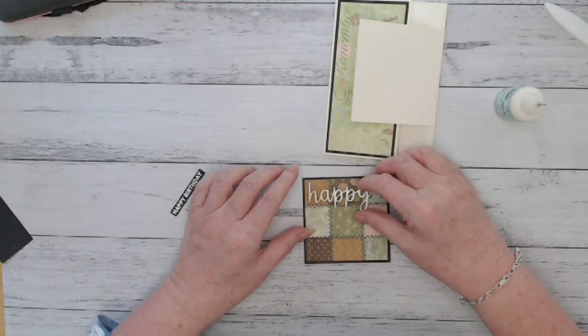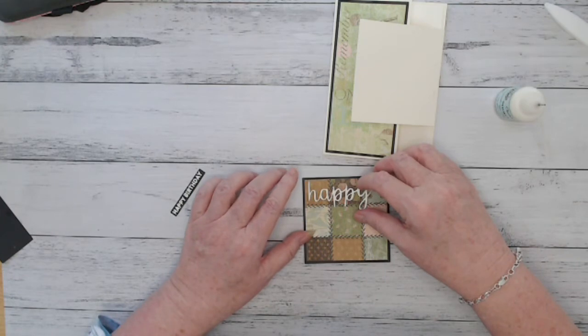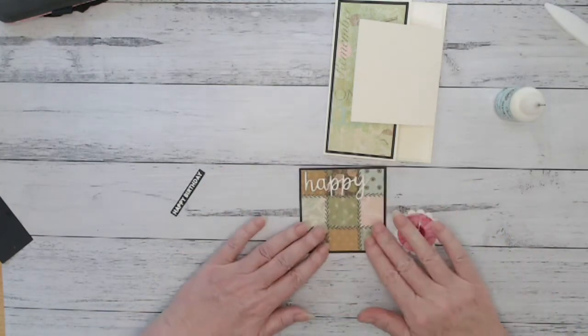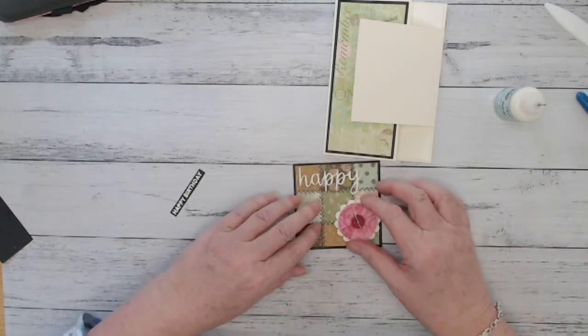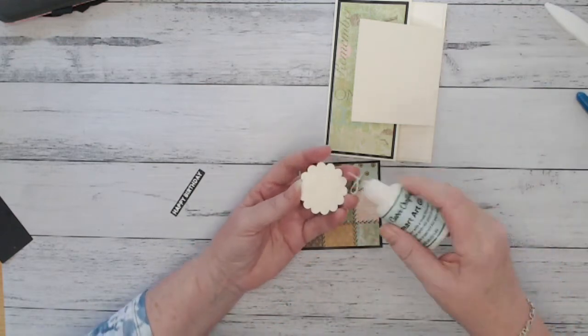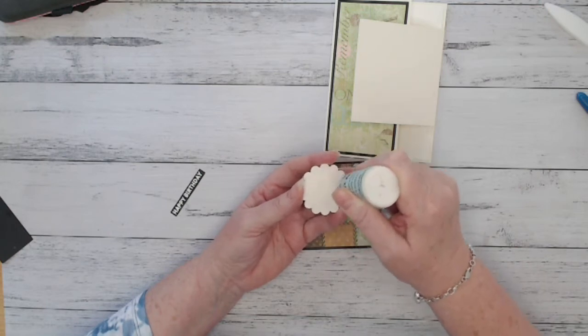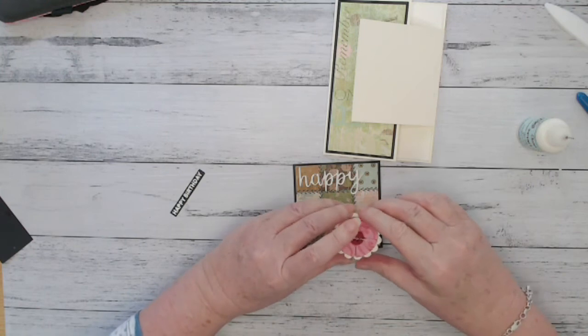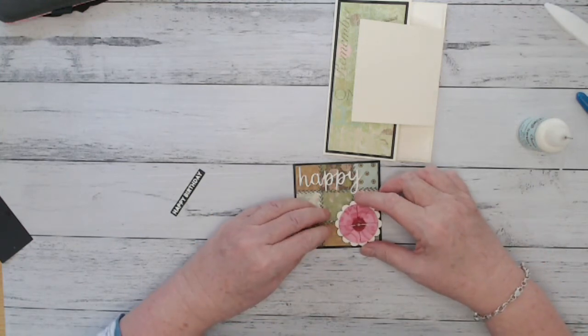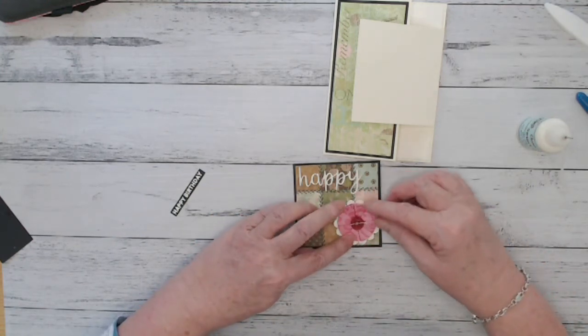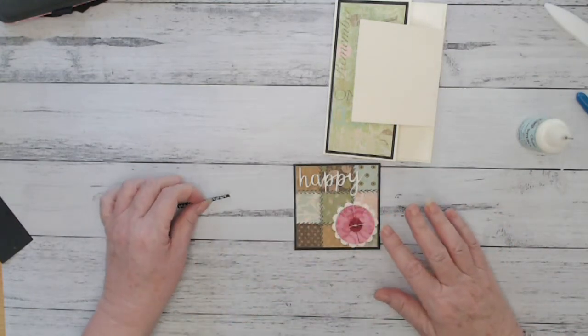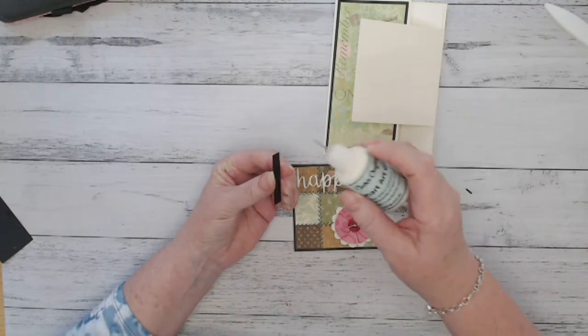I stacked three happies on top of one another from the happy birthday dies set. I've made a little embellishment flower once again out of some scraps of paper, and then just put it on a nice piece of cardstock that I've cut out of the same colored cardstock with a scalloped edge circle. I'm just going to position that to brighten up the front.